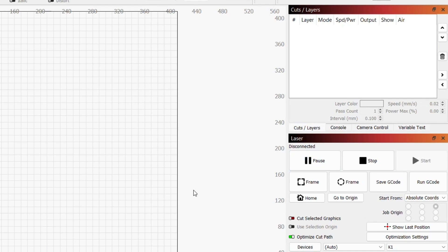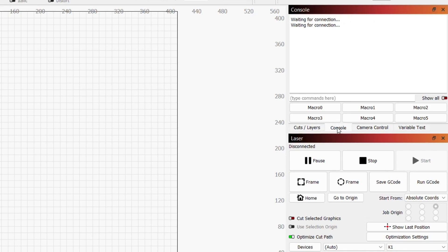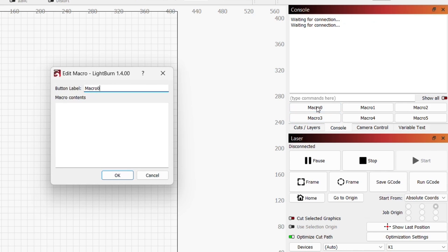To use the autofocus feature I needed to program a macro button under the console tab, by right clicking on one of the macro buttons. Then I can give the button a name, and write open bracket ESP500 close bracket.